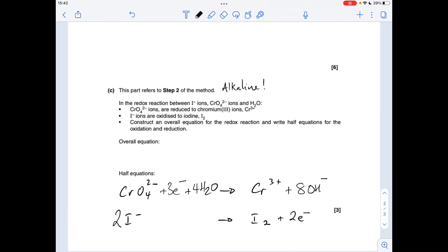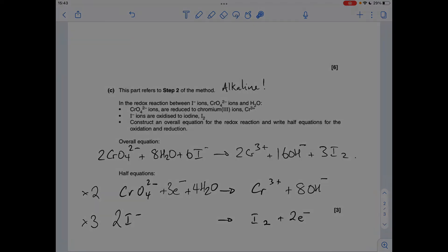So to generate the overall equation, we need to get the electrons the same on each side so when we add them together they're going to cancel out. So if we multiply the chromium one by two, we get six electrons here. If we multiply the iodine one by three, we'll get six electrons here. So all we need to do now is just add these two equations together and that'll give us the overall equation. Thanks for watching.